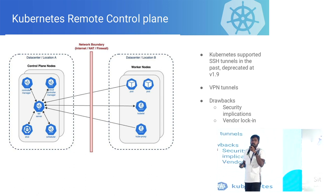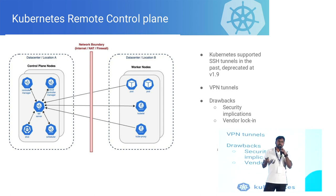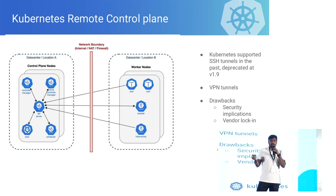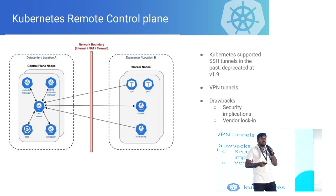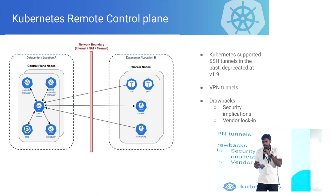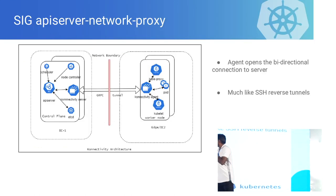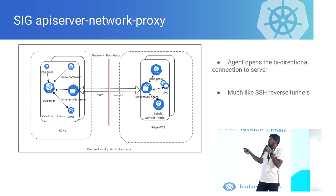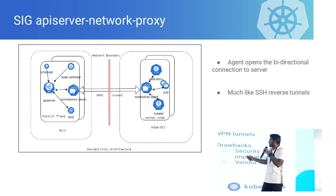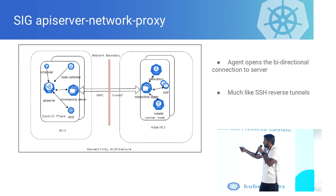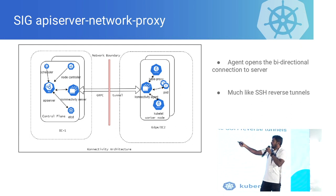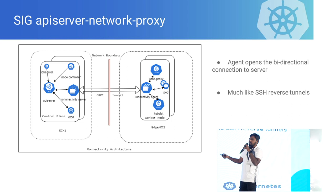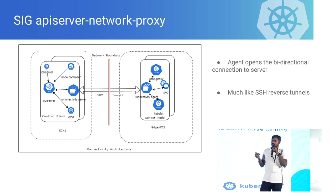Another option is setting up a VPN between the controller and worker nodes as an overlay network, so the controller thinks the worker nodes are in the same network. But the problem with VPN is it adds additional cost and introduces vendor lock-in. So Kubernetes came up with a Special Interest Group called API Server Network Proxy. The difference from the previous topology is that instead of an SSH tunnel, we now form a gRPC tunnel — the communication between the worker node and the control plane happens through a gRPC tunnel, and the worker node registers itself with the control plane by forming this gRPC connection.